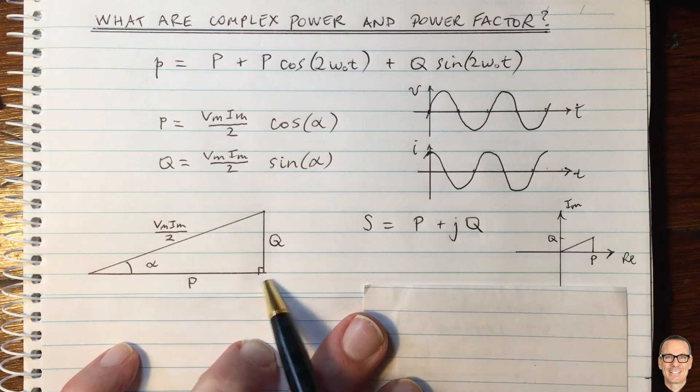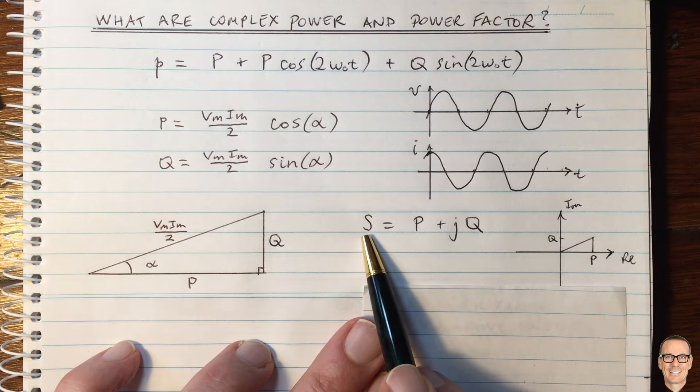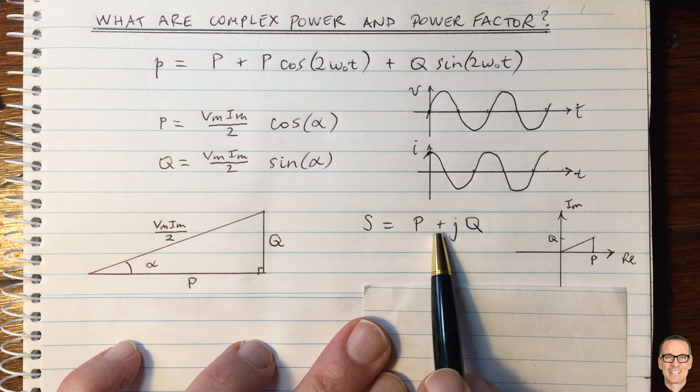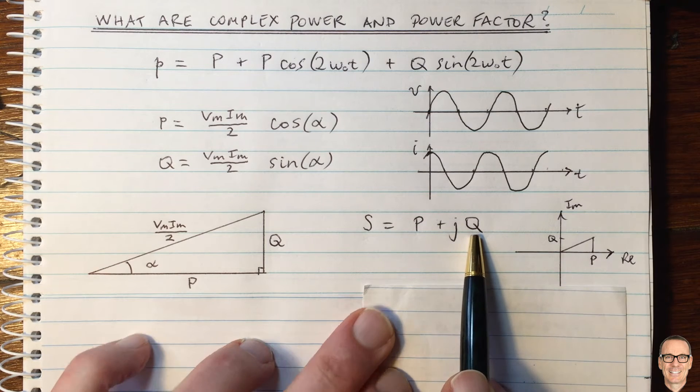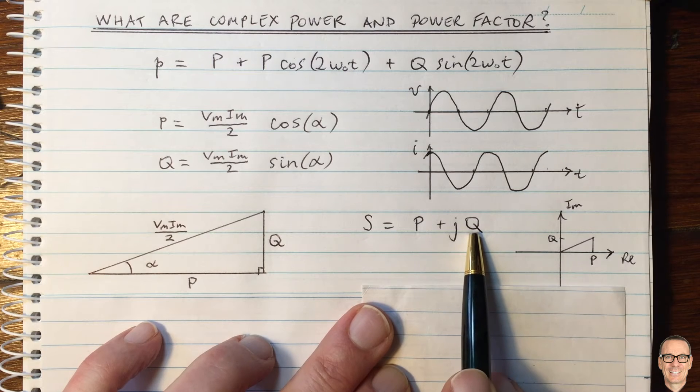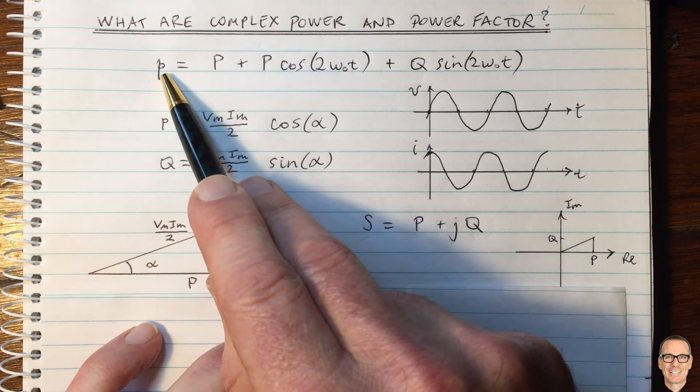And so here's this triangle here represented in the complex plane, and we often use the letter S where we put the P in the real component and the Q in the imaginary. But don't get fooled, this is not an imaginary power. Q is a real component of the instantaneous power.